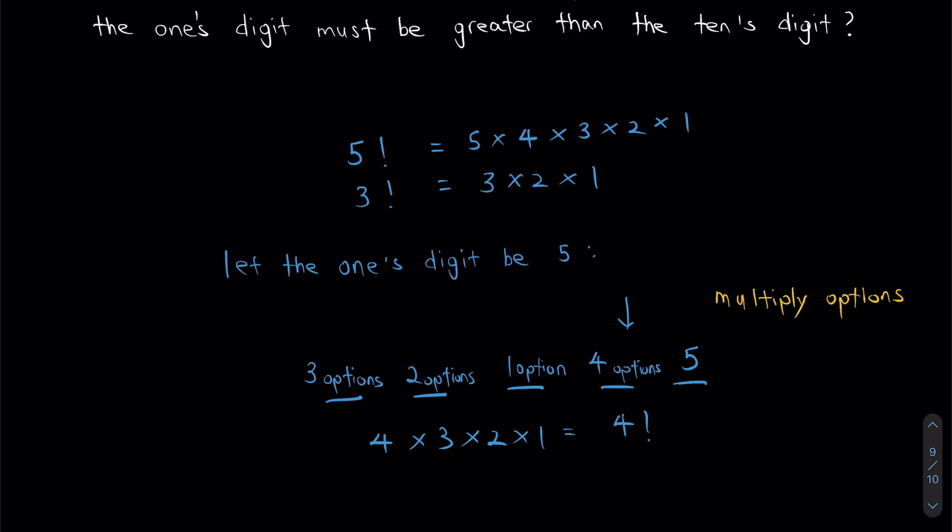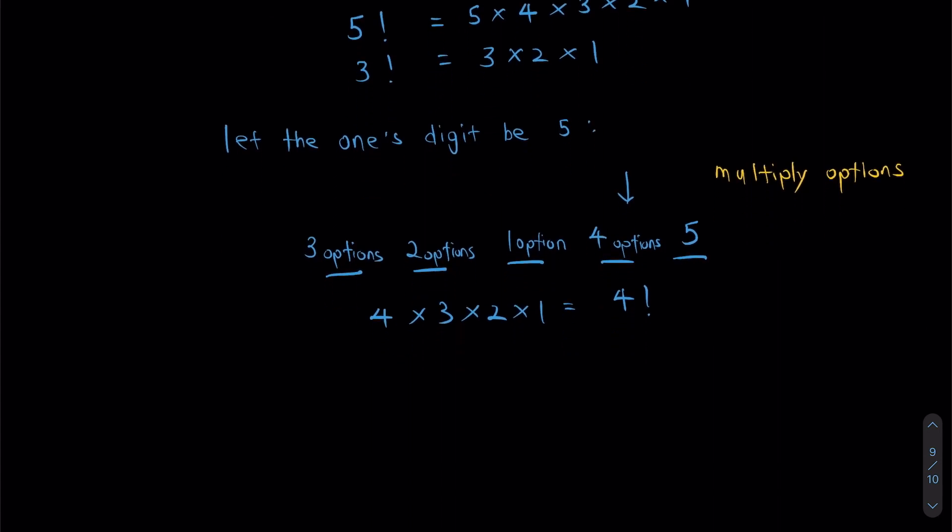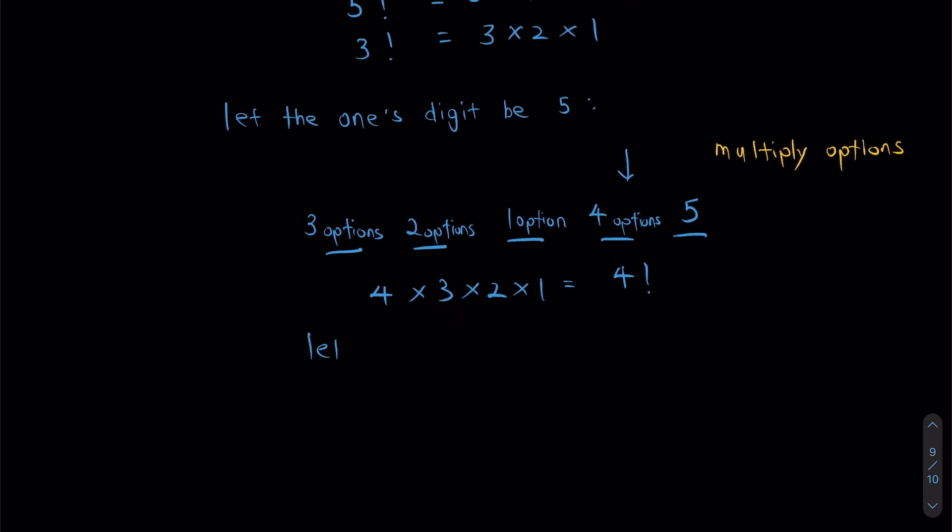Now we've finished one digit as five. Let's move on to let ones digit be four. So similarly, what I'm going to do is this: I'm going to draw the blanks. If my ones digit is four